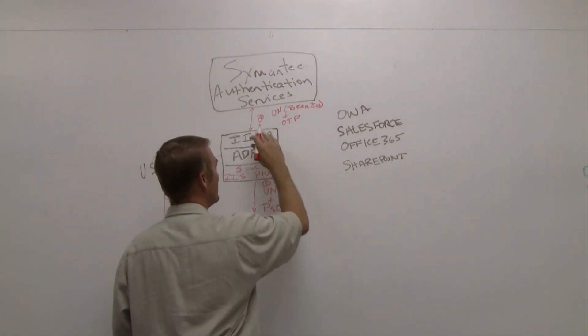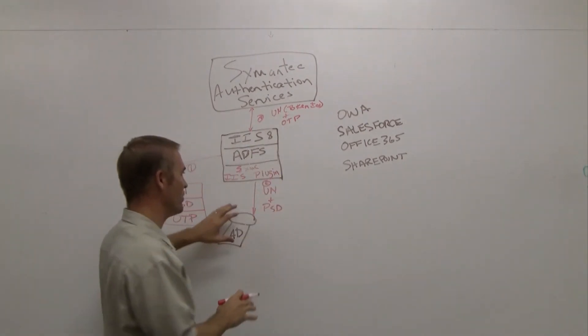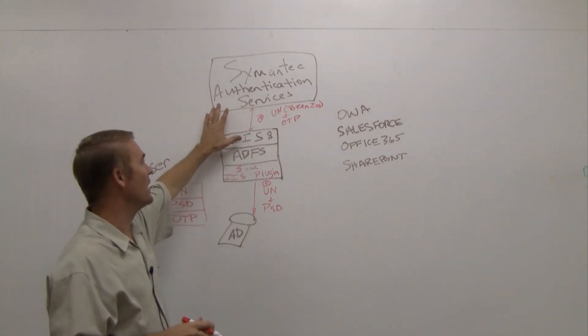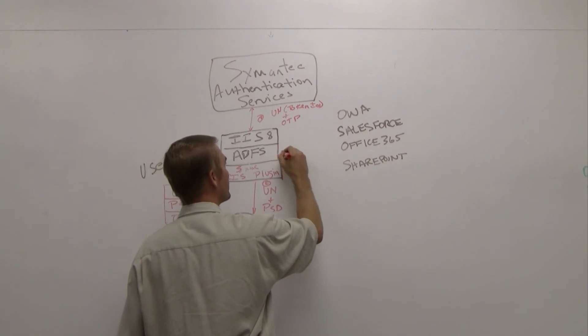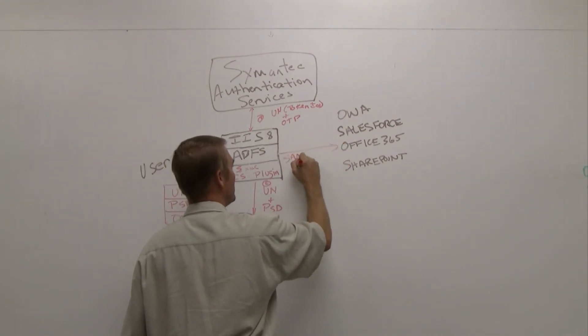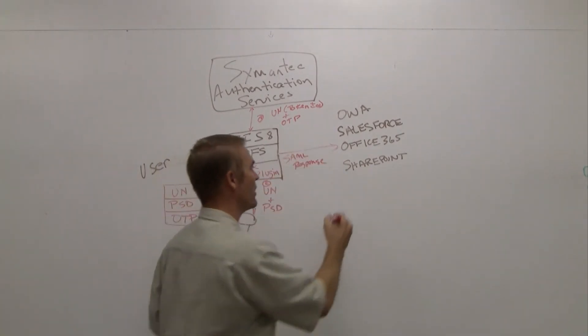Once they have done that, we receive authentication responses both from the first factor and the second factor. The ADFS will produce a SAML response and send that over to the reliant party.